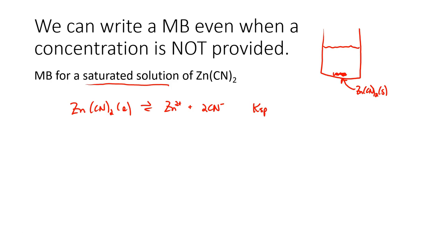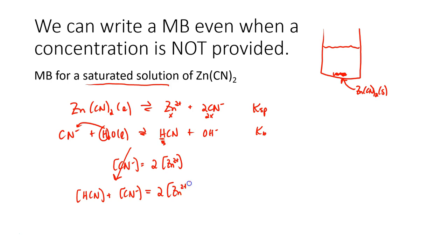Now, unlike the previous example for lead 2 bromide, cyanide can do something else. Cyanide can behave as a weak base to form hydrogen cyanide and water in a KB reaction. So I always begin with the Ksp. And again, by calling zinc X and cyanide 2X, you are saying that the cyanide concentration is twice the zinc ion concentration. But is this the only form in which cyanide can exist? No. It can also exist with a proton attached to it. So the real mass balance is going to be that HCN plus cyanide, both of those forms are going to equal twice the zinc ion concentration.